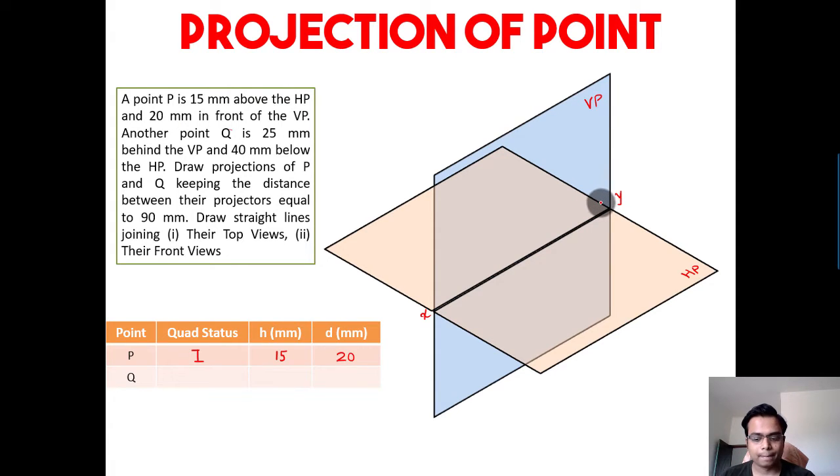Let's try to locate this point P somewhere here. Now, this over here is the height above the horizontal plane, and that's 15, so let me write 15 over here. And this is the distance in front of the VP, that is 20, so let me just write 20. When you try to take a look at this from over here, you're gonna have the front view.